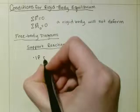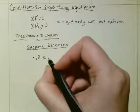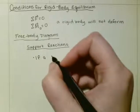So if a support prevents the translation of a body in a given direction, then a force is developed on the body in that direction.